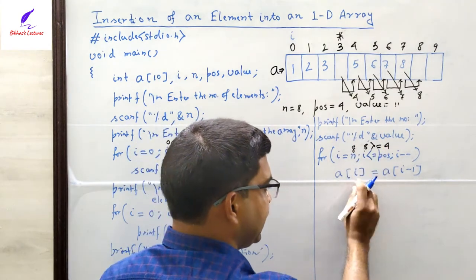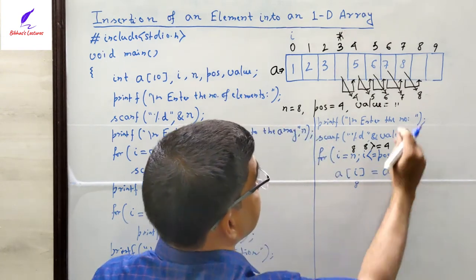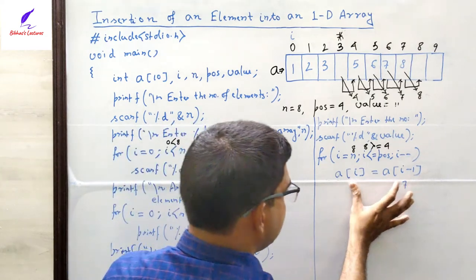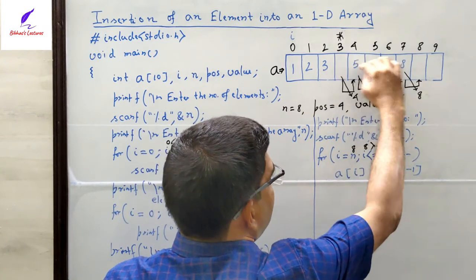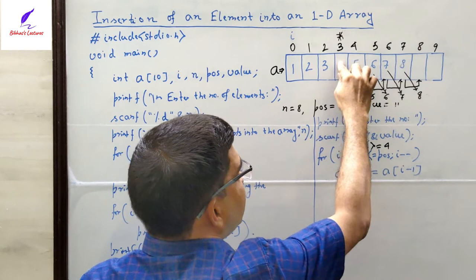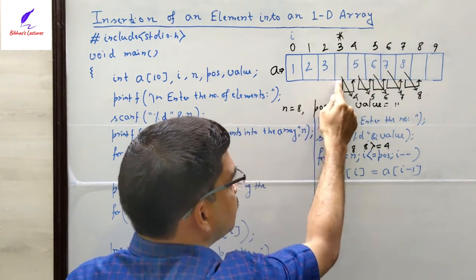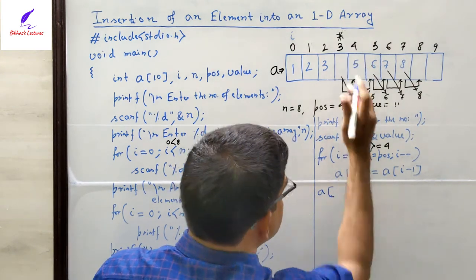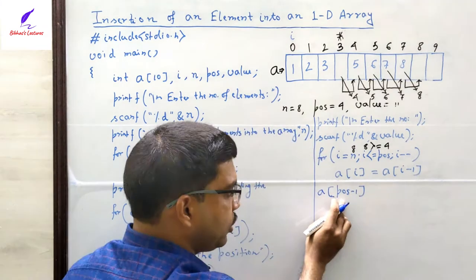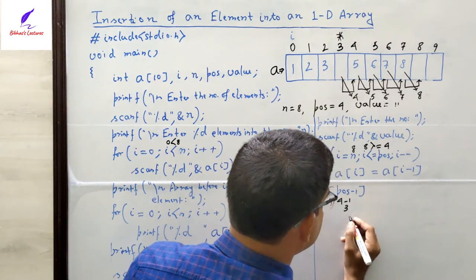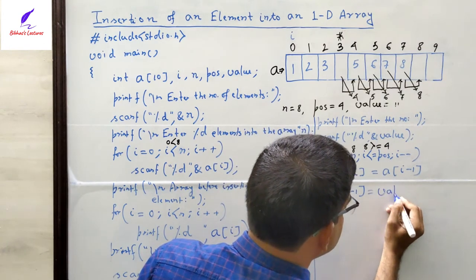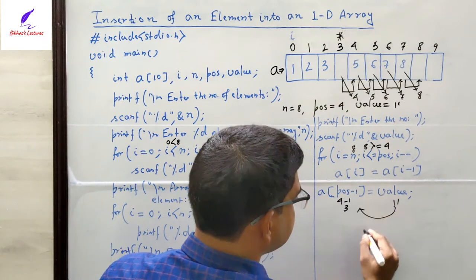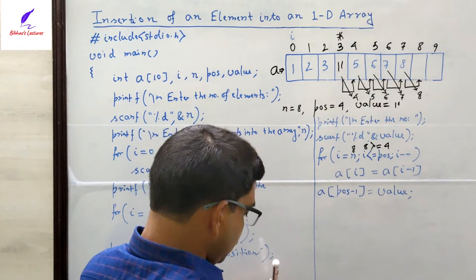After the shifting loop, index 3 is now vacant — that is position 4 (pos minus 1 = 4 - 1 = 3). We place the new element there: `a[pos - 1] = value`, storing 11 at index 3. Previously we had 8 elements; after inserting 11 we now have 9 elements.